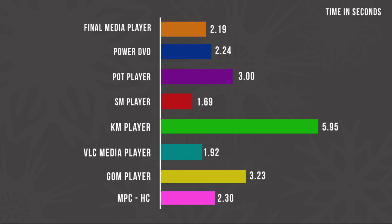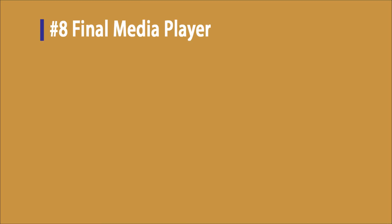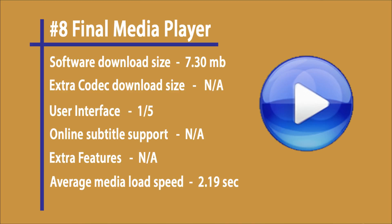Starting from the eighth position, we have Final Media Player. It is a lightweight media player with a download size of 7.3 MB. It has no extra codecs to download. The user interface is really bad — I'll give it 1 out of 5. It does not have online subtitle support, so you have to do it manually. Average load speed is 2.19 seconds, which is bit impressive.